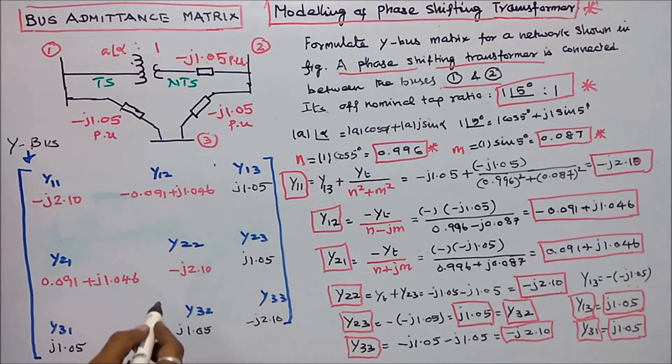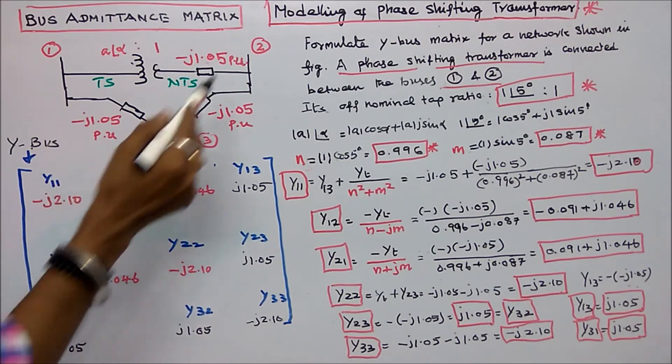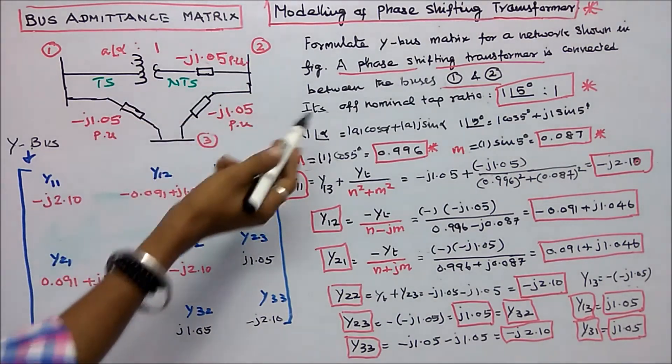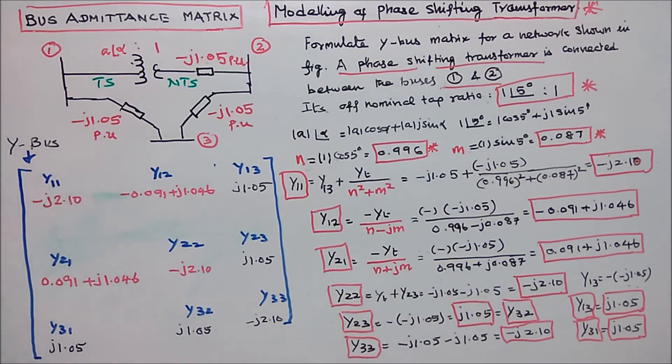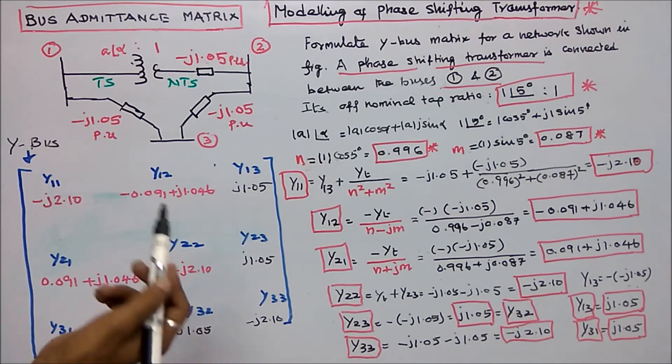The next is y23. y23 is equal to minus into minus j 1.05 plus j 1.05. y23 is equal to plus j 1.05. That is equal to y32. This is 1.05.